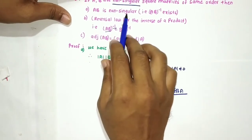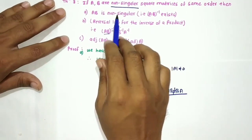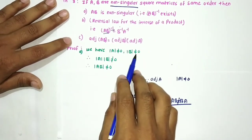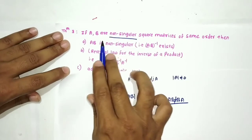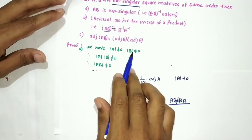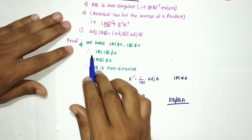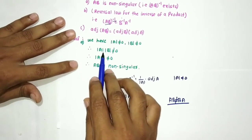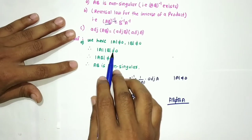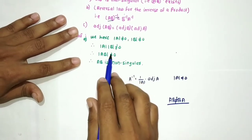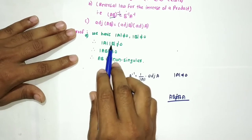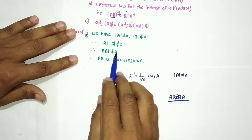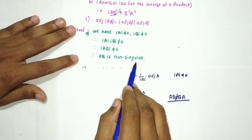To show AB is non-singular, since A and B are non-singular, determinant of A is non-zero and determinant of B is non-zero. Hence determinant of A times determinant of B is non-zero. Since determinant of AB equals determinant of A times determinant of B, determinant of AB is non-zero. Hence AB is non-singular.